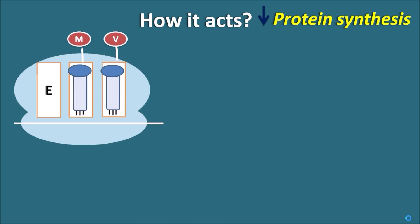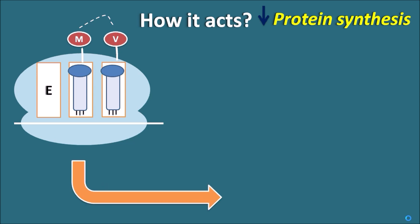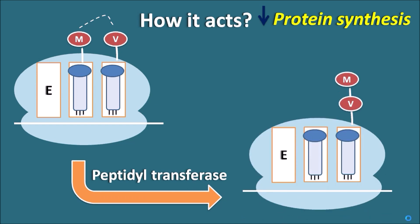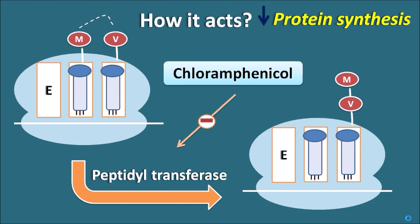Chloramphenicol mainly acts by inhibition of protein synthesis. Within protein synthesis, one important step is the formation of a peptide link between the amino acids present on the P site and A site of the ribosome. This step is mediated by the key enzyme peptidyl transferase, which forms the new peptide bond between two amino acids. This crucial step is blocked by chloramphenicol.